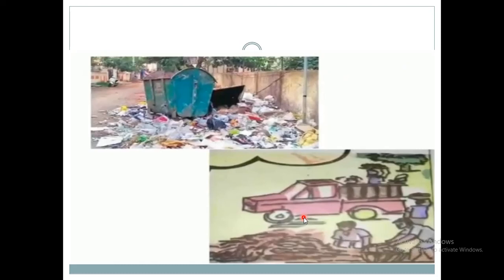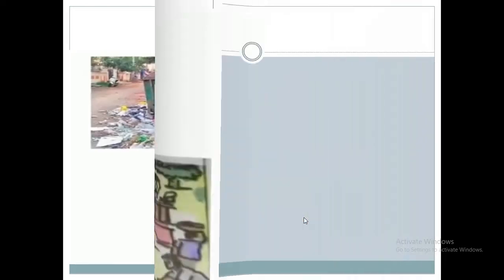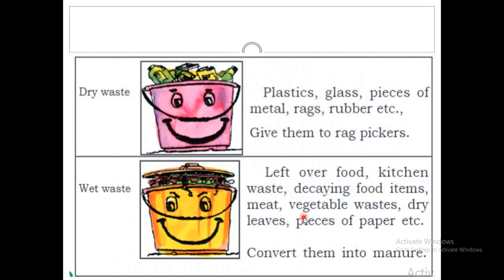This is one of the disposal methods. Now we can see the types of waste. Waste can be classified into four types: dry waste, wet waste, hazardous waste, and polluted waste. Let's learn about each type.